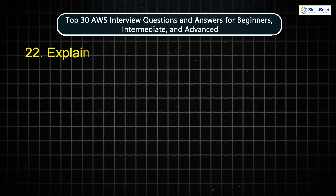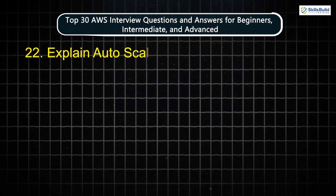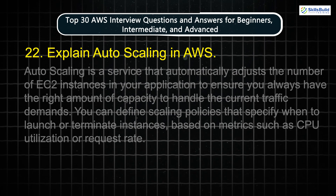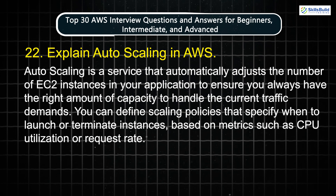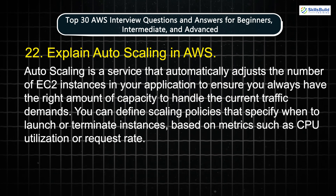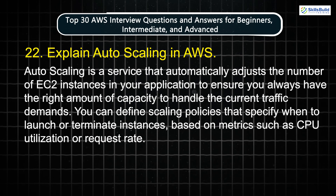Question 22: Explain autoscaling in AWS. Autoscaling is a service that automatically adjusts the number of EC2 instances in your application to ensure you always have the right amount of capacity to handle the current traffic demands. You can define scaling policies that specify when to launch or terminate instances based on metrics such as CPU utilization or request rate.